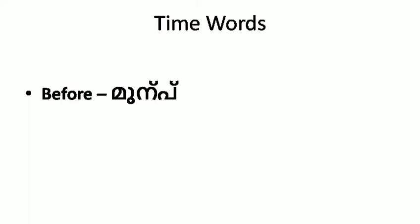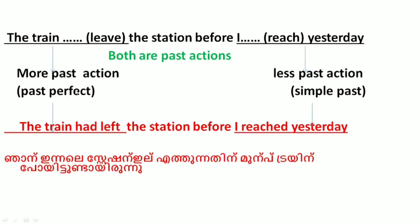The time word for past perfect tense is 'before.' For example: 'The train had left the station before I reached it yesterday.' Both actions are in the past, but the more past action — the train leaving — is expressed in past perfect: 'The train had left.' The less past action — 'I reached yesterday' — is expressed in simple past.